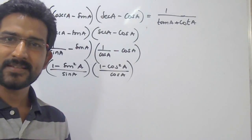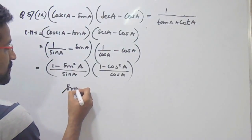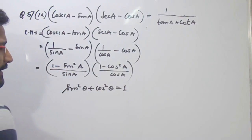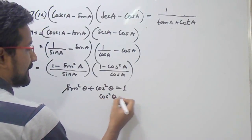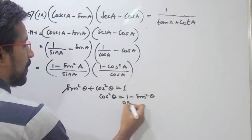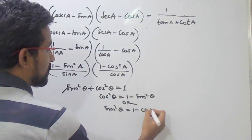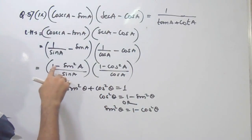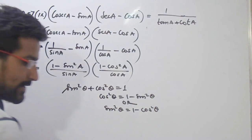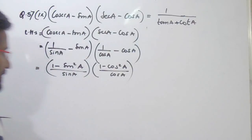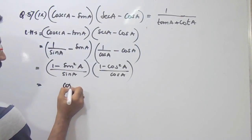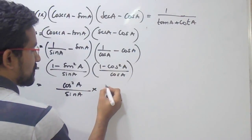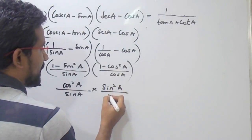Now as we have already seen an identity that sin square theta plus cos square theta is equal to 1. So in the place of 1 minus sin square A we can write cos square A, because cos square A is nothing but 1 minus sin square A. Or sin square A is 1 minus cos square A. So 1 minus cos square A will be sin square A, and 1 minus sin square A is cos square A. So we can simplify it further: 1 minus sin square A is cos square A divided by sin A, and 1 minus cos square A is sin square A divided by cos A.